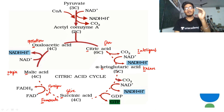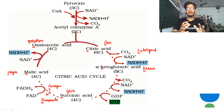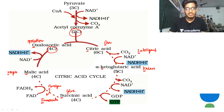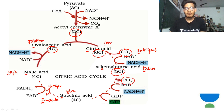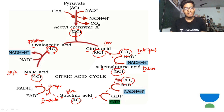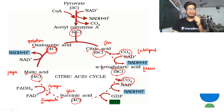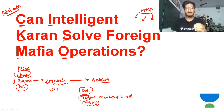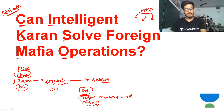The initial thing to remember is: your pyruvate was initially converted into acetyl coenzyme A, and that 2-carbon acetyl coenzyme A combines with 4-carbon oxaloacetate to form 6-carbon citric acid. Then decarboxylation gives a 5-carbon product. Another decarboxylation gives a 4-carbon product. No further decarboxylation, so the 4-carbon compounds are preserved and eventually regenerate oxaloacetate. This is the basic scheme of the Kreb cycle - just remember 'Can Intelligent Current Solve Foreign Mafia Operations' and you're done.